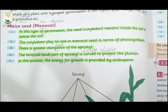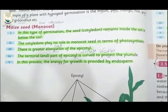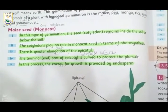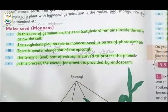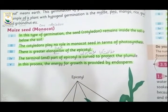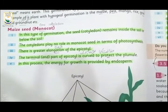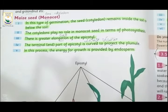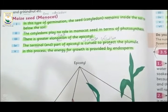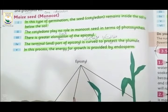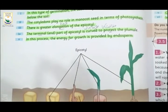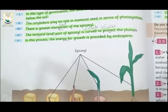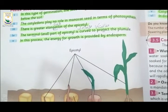Maize ایک Monocot ہے. Monocot means one cotyledon ہوگا. کل ہم نے Dicot پڑھا تھا اس میں two cotyledons تھے. اس میں Monocot میں one cotyledon ہوگا. In this type of germination, seed cotyledons remain inside the soil or below the soil. The cotyledons play no role in Monocot seed in terms of photosynthesis. There is a greater elongation of the epicotyle. The terminal part of the epicotyle is curved to protect the plumule. In this process, the energy for growth is provided by the endosperm.